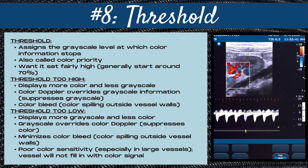The next control in our color Doppler optimization checklist is the threshold setting. The threshold assigns the grayscale level at which color information stops — also called the color priority control — and you want this set fairly high, generally starting around 70%. When the threshold is set too high, it displays more color and less grayscale; the color Doppler information overrides and suppresses the grayscale, and this is when color bleed — color spilling outside of vessel walls — can occur. When the color threshold is set too low, it displays more grayscale and less color; the grayscale overrides and suppresses the color, minimizing color bleed but resulting in poor color sensitivity, especially in large vessels which will not fill in with a color signal.